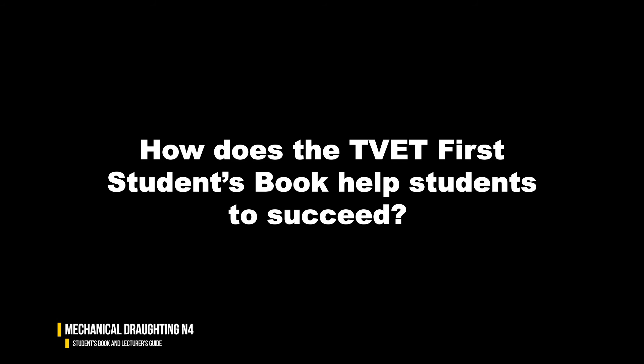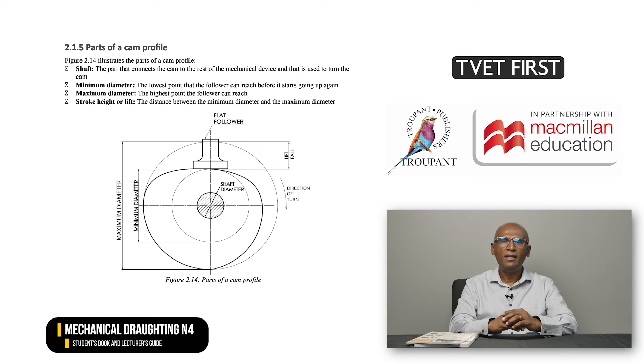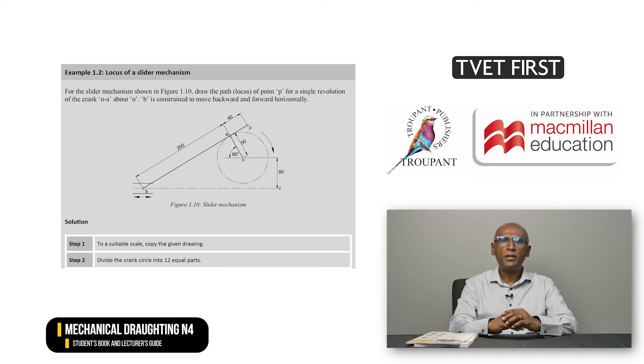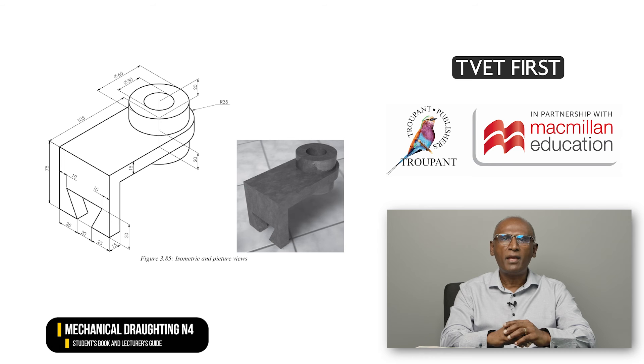How does the TVET First Student's Book help students to succeed? The TVET First Student's Book is the ideal textbook to guide students towards success in their studies. It is written by experienced lecturers who understand the needs of students and lecturers. Features include clear explanations that help students understand the content and correct misconceptions, and fully worked examples that help students master the problem-solving process step by step. Many labelled diagrams make it easy to identify and draw different mechanisms and parts.